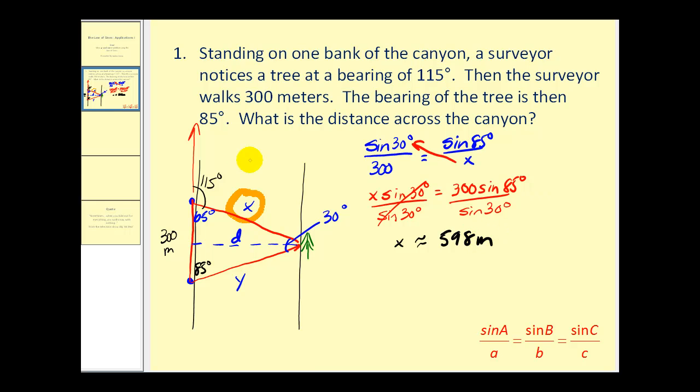So x is approximately 598 meters. Let's go ahead and label that. Now we should be able to use this right triangle to determine the length of D, or the distance across the canyon. So write an equation that involves this angle, this side, and this side. And since this side is opposite this angle, and this is the hypotenuse of that right triangle, we can say the sine of 65 degrees must equal the opposite side divided by the hypotenuse, or D.